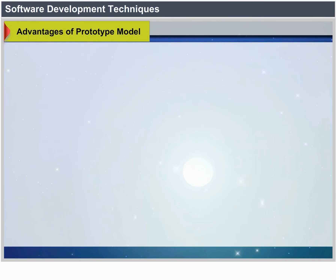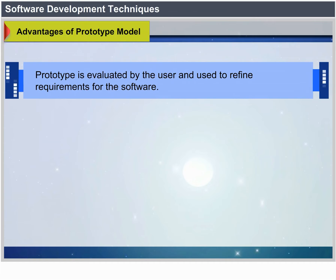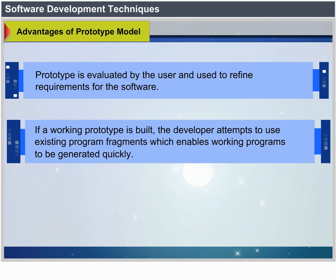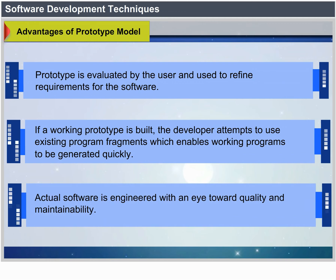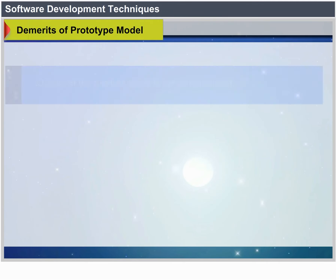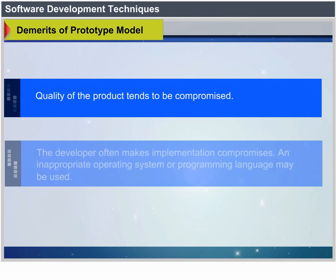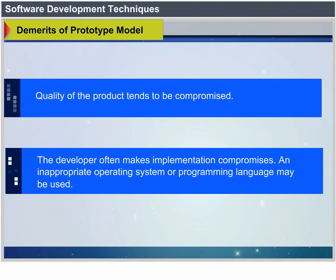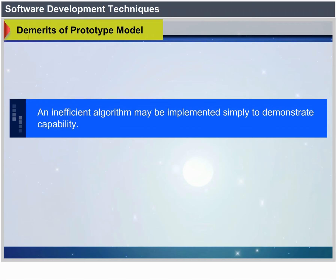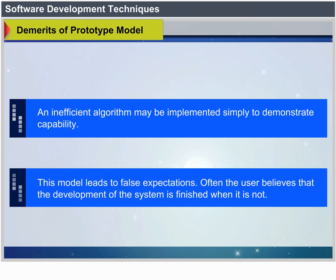Advantages of Prototype Model: the prototype is evaluated by the user and used to refine requirements. If a working prototype is built, the developer attempts to use existing program fragments to generate working programs quickly. Actual software is engineered with an eye toward quality and maintainability. Drawbacks: compromises on quality; the developer often makes implementation compromises. An inappropriate operating system or programming language may be used, and this model leads to false expectations — users may believe development is finished when it is not.